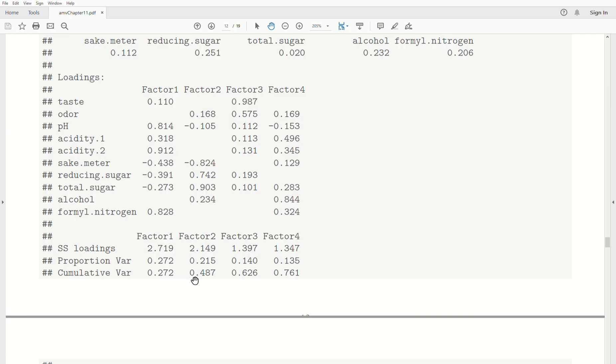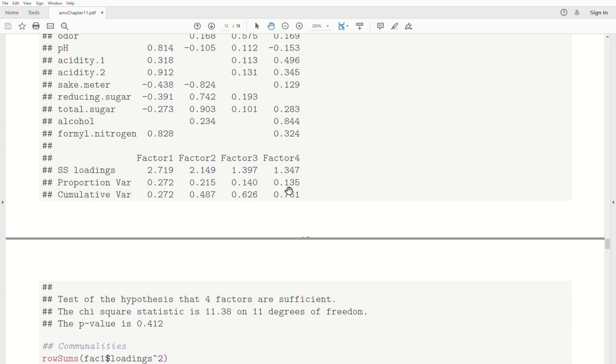It produces the sums of squares associated with each factor. You can see that 27% of the variability is accounted for by factor 1, 21% for factor 2, 14% factor 3, and about 14% for factor 4. One of the benefits of maximum likelihood estimation is we get a test. To test the hypothesis that the four-factor model is sufficient, we just look at the results. It tells us the chi-square statistic and the degrees of freedom, and the p-value is 0.4. The null hypothesis is the four-factor model is sufficient, and since we do not reject, we assume that the four-factor model is sufficient.